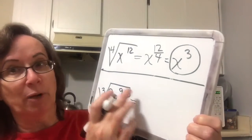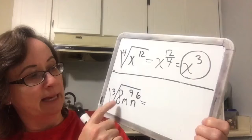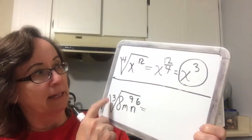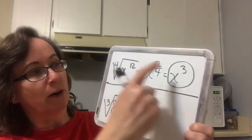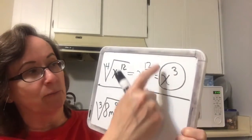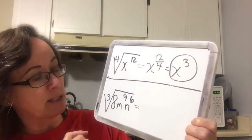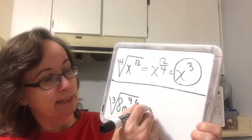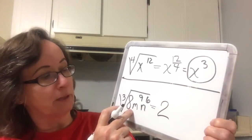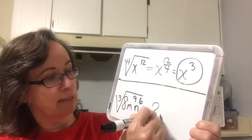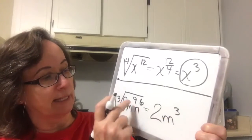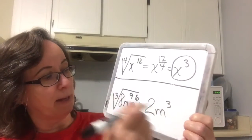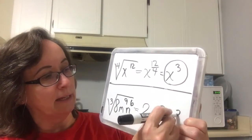This one is perfect because 9 divides by 3 and 6 divides by 3. A 12 divided by 4, and I ended up with a 3 when I put it into rational exponent form. The cubic root of 8 is already perfect. The cubic root of m to the 9th is already perfect — we pull it out as 9 divided by 3. And 6 divided by 3 is 2, so we get n squared.